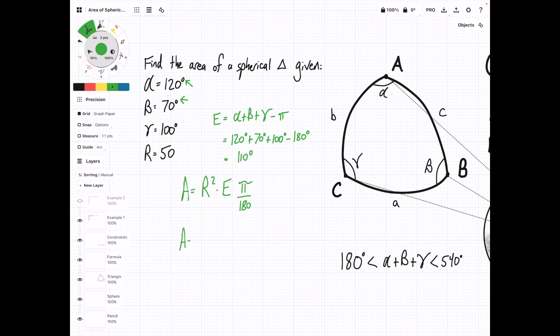Now we can substitute that into this part. We're going to have 50 squared times 110 degrees times pi over 180, and if we plug this into a calculator, we get that the area is equal to 4,799.66. That's the answer to this first problem.